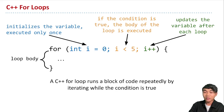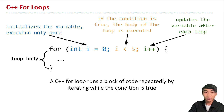Within the curly braces following the for loop, we have what's called the loop body. In this loop body we can have any number of statements, and those are what we will repeat for as long as the condition is true.